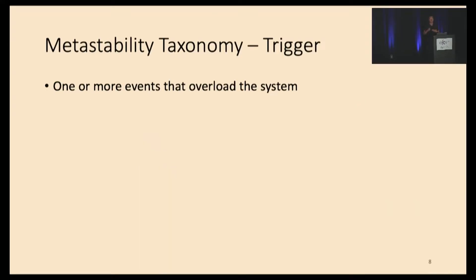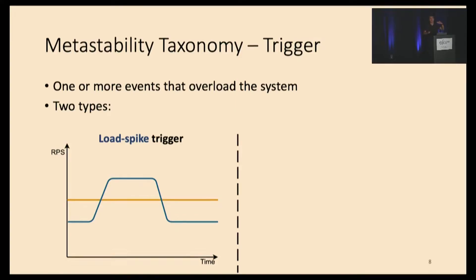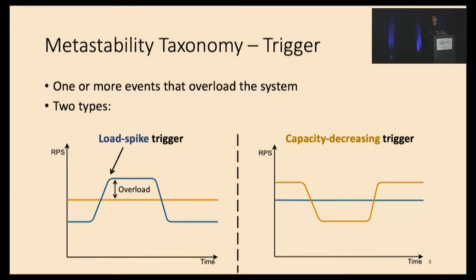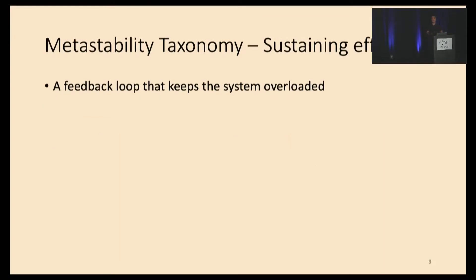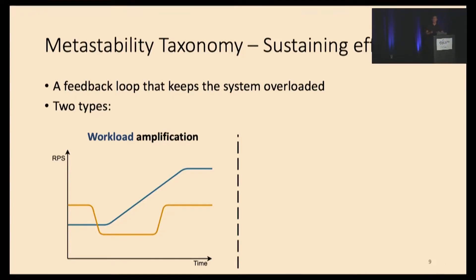Based on our observations, we can break metastable failures down into a taxonomy. First, triggers — we define a trigger as one or more events that can overload the system. There are two main types: a load spike trigger, which brings the load above the capacity of the system so it's overloaded, and a capacity decreasing trigger, such as background interference that temporarily decreases capacity below the load. For sustaining effects, we define them as a feedback loop that keeps the system overloaded even after triggers are removed. One type is workload amplification, as seen in the retry storm example.